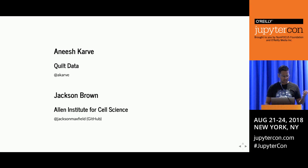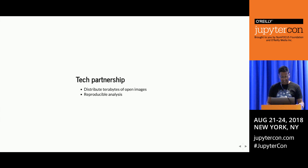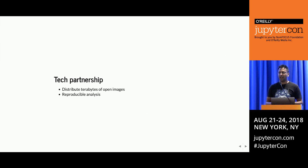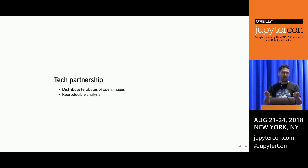We've just been introduced. I'm Anish. This is my colleague Jackson Brown, who is a senior researcher at the Allen Institute for Cell Science. We're here to talk about lessons learned during a technology partnership over the past six months, where we've tackled the problem of distributing terabytes of open images and doing it in a way that's accessible to any Jupyter notebook anywhere in the world—and that given the same data and the same code, that notebook will run the same way everywhere.